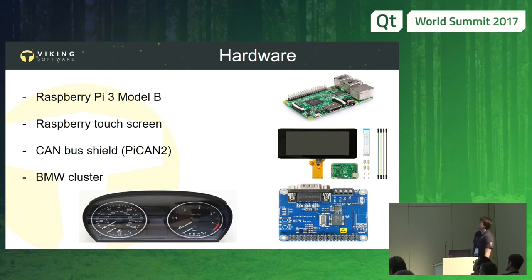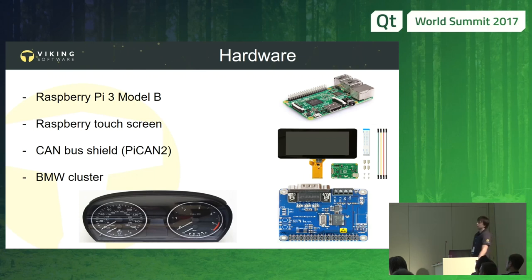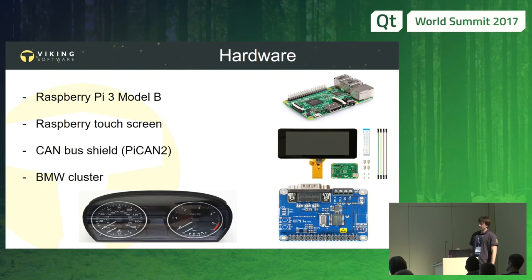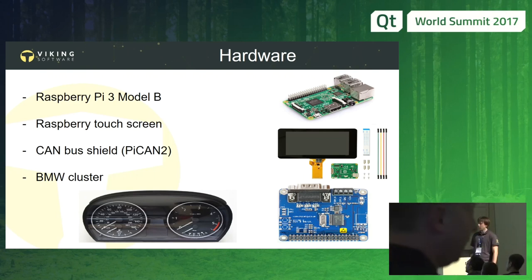Now let's look at the hardware. It's a third-generation Raspberry Pi Model B with a 1.2 GHz quad-core Broadcom CPU and one gigabyte of RAM — pretty fast for Qt and QML. We also have a Raspberry Pi touchscreen, and to connect our Raspberry Pi to the CAN network we used a CAN bus shield. As a light device we have a cluster from BMW. They are connected by three wires: two signal wires — CAN high and CAN low — and ground. The cluster has its own power source.